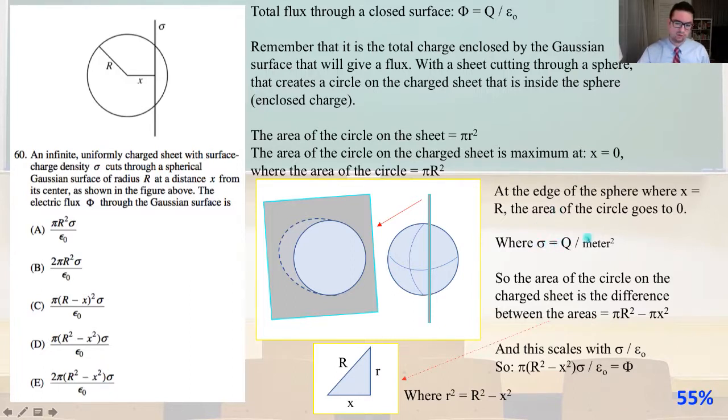The area of the circle on the charge sheet is the difference between the areas, πR² minus πX². You can see that from drawing a triangle where we have big R and X, and then little r, which is the radius of our circle. That scales with σ over ε₀. So π times (R² - X²) times σ over ε₀ equals our electric flux. That is answer D.